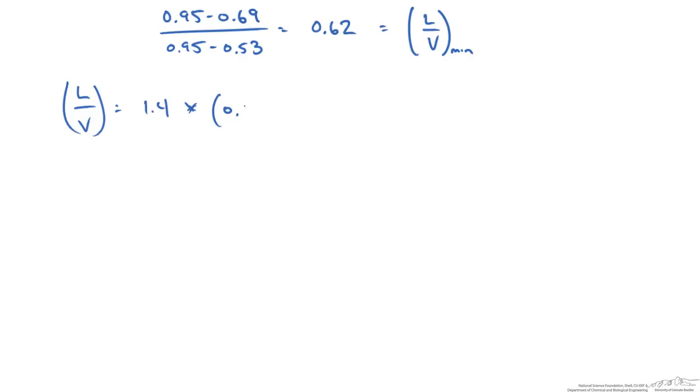Our L over V that we're actually operating at is 1.4 times that value, which gives me a new slope of 0.868. I'm going to use 0.87, and now I can determine my operating line for the rectifying section as 0.87x plus D over V times our distillate composition. We know our distillate composition is 0.95.